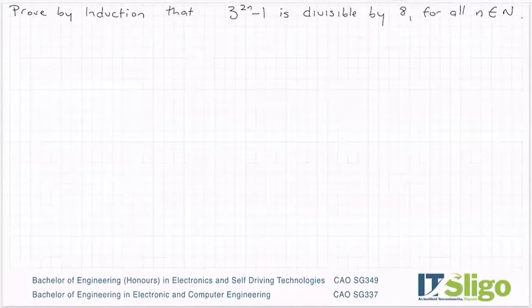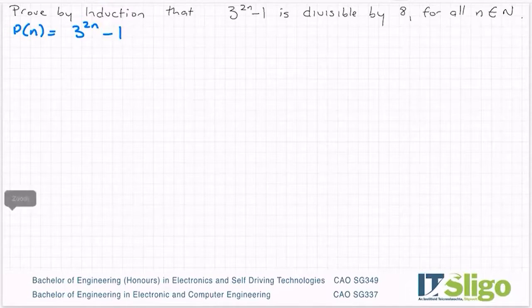Our statement P(n) is 3^(2n) - 1, and that statement can be simplified if you wish. 3^(2n) can be written as, for example, (3²)^n - 1. What am I doing there? I'm using this rule of indices. I have 3^(2n), so it's a power to a power.